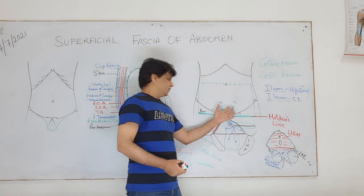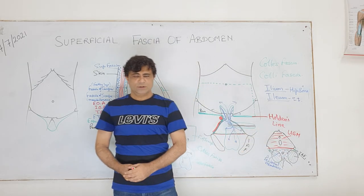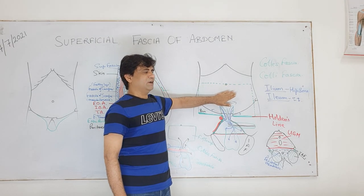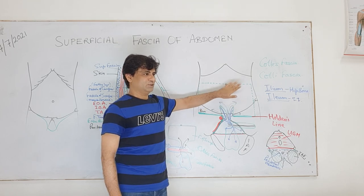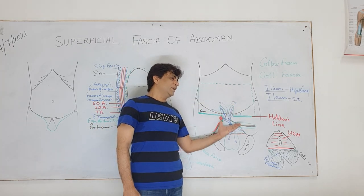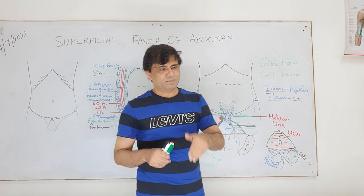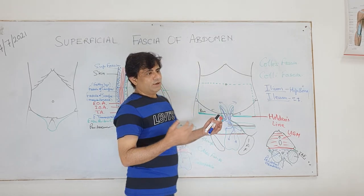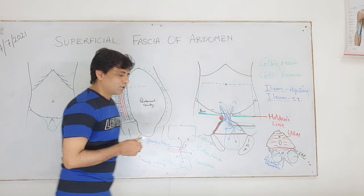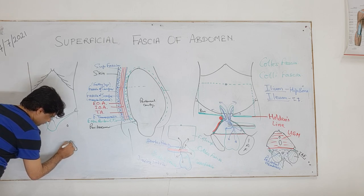What lies below the urogenital membrane is called the superficial perineal pouch. Remember that this superficial fascia of the anterior abdominal wall - the membranous fascia of Scarpa - is continuous with the superficial perineal pouch. So the extravasated urine will collect in the superficial perineal pouch but will not spread to the thighs and will not spread deep down into the pelvis.